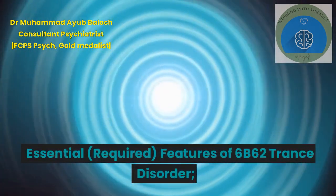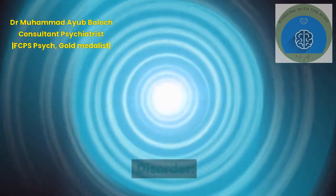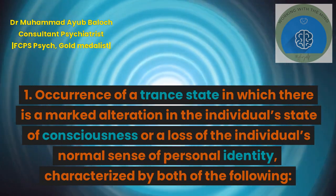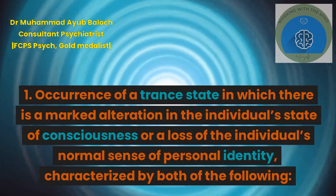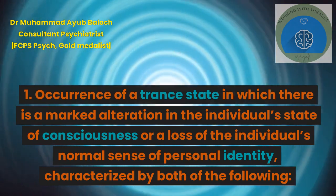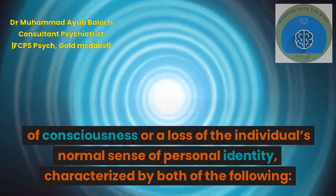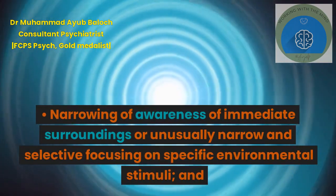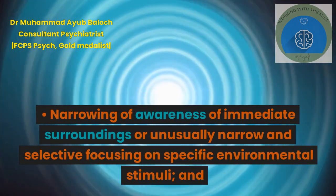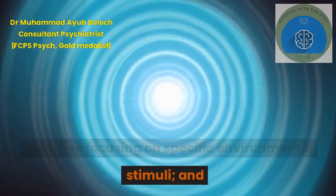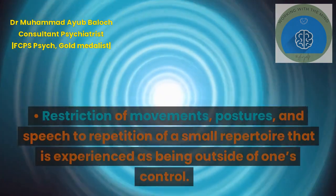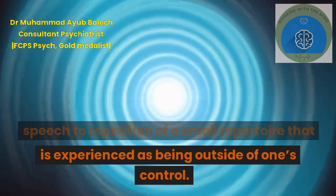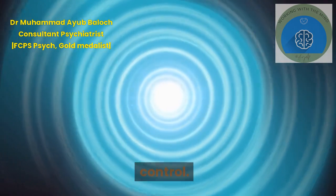Essential, required features of 6B62 Trance Disorder. 1. Occurrence of a trance state in which there is a marked alteration in the individual's state of consciousness or a loss of the individual's normal sense of personal identity, characterized by both of the following: narrowing of awareness of immediate surroundings or unusually narrow and selective focusing on specific environmental stimuli, and restriction of movements, postures, and speech to repetition of a small repertoire that is experienced as being outside of one's control.